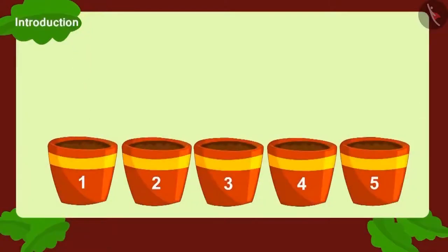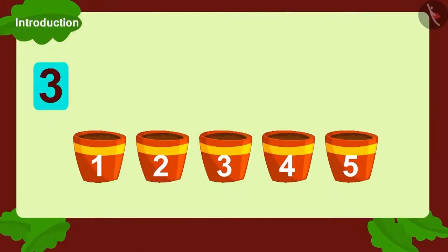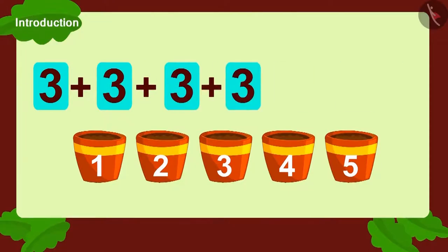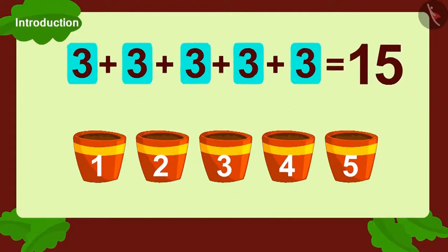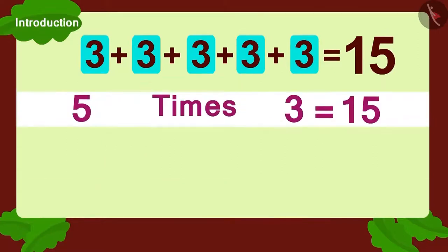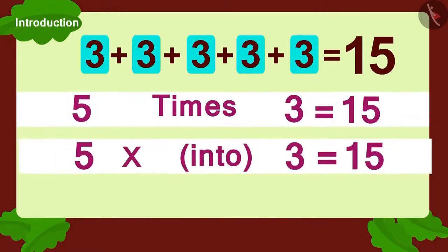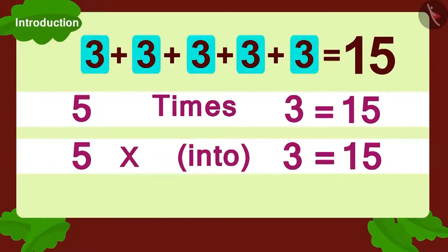Children, if Babban had planted three seeds each in five pots, then can you write this using multiplication? Yes! We can write it as three plus three plus three plus three plus one more three equals fifteen. Or five multiplied by three.